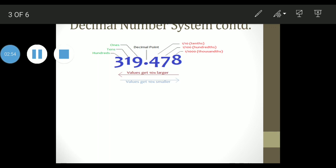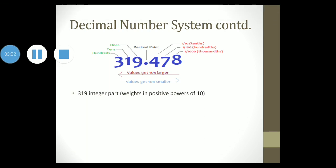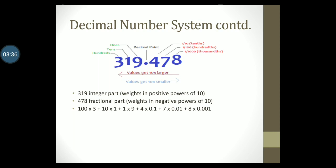Also note that the symbols 3, 1, 9 make up the integer part of the number, and the symbols 4, 7, 8 are the fractional part of the number. The integer part of the number have weights which are in positive powers of 10, and the fractional part of the number have weights which are in negative powers of 10. Therefore, the number 319.478 can be written as 100 × 3 + 10 × 1 + 1 × 9 + 4 × 0.1 + 7 × 0.01 + 8 × 0.001.